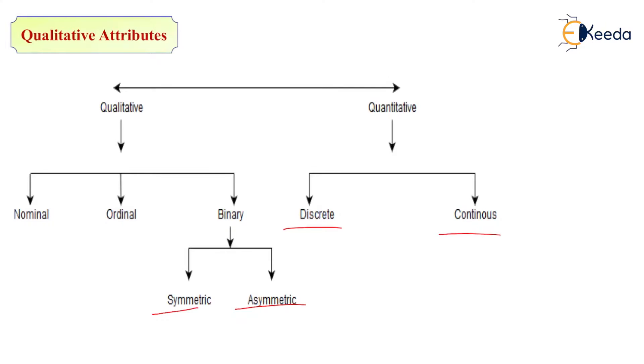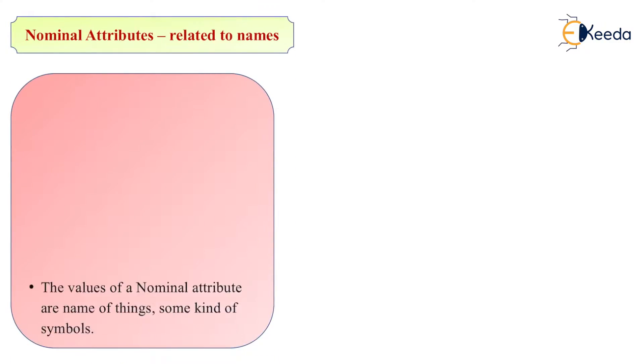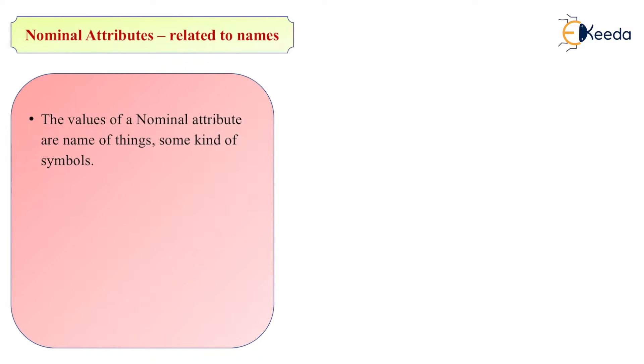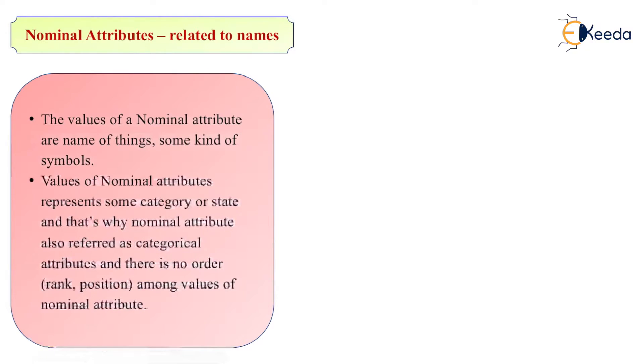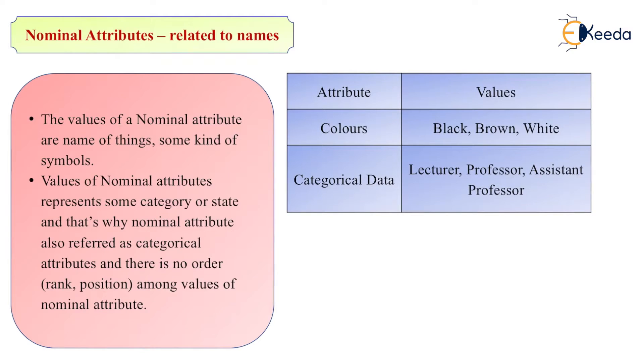So first, we will see nominal data type. The values of nominal attributes are names of things or some kind of symbol. Values of a nominal attribute represent some category or state. That's why nominal attributes are also referred to as categorical attributes. And there is no order among values of a nominal attribute.